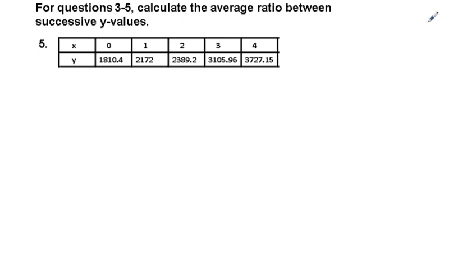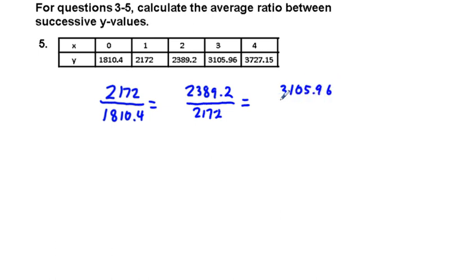For question 5, calculate the average ratio between successive Y values. So really it's going to be similar to what we did in problem 3. We're going to take 2,172 over 1810.4. Then we're going to take 2,389.2 over 2,172. Next we're going to take 3,105.96 divide that by 2,389.2. And the last one we're going to take 3,727.15 over 3,105.96.